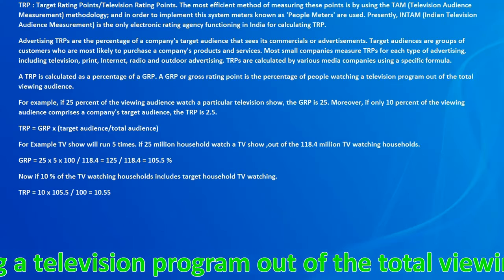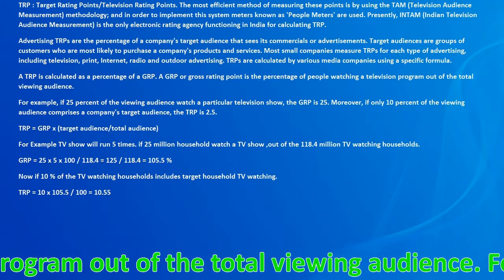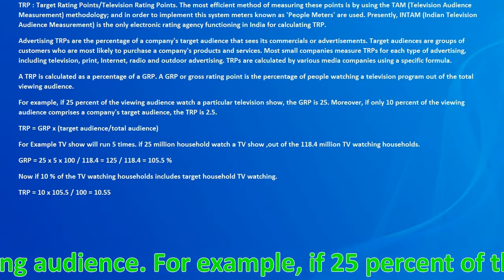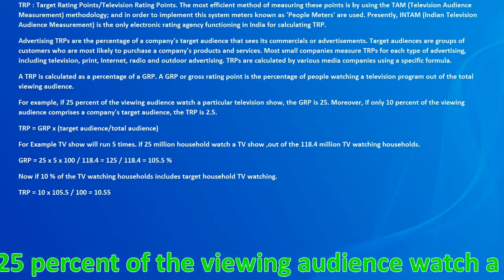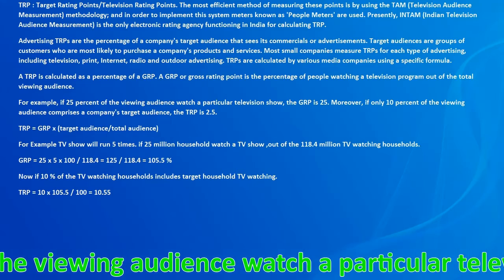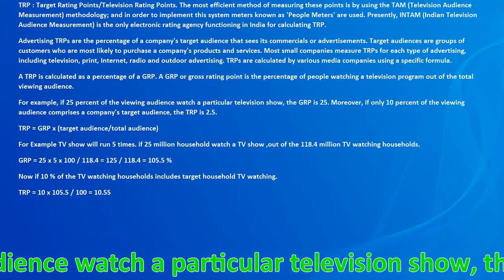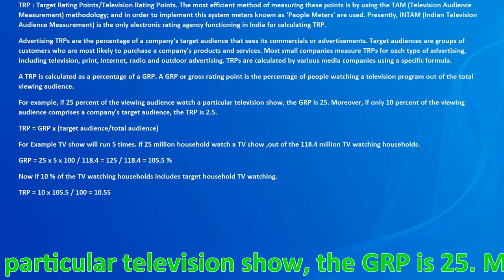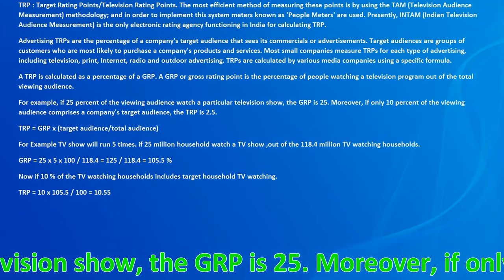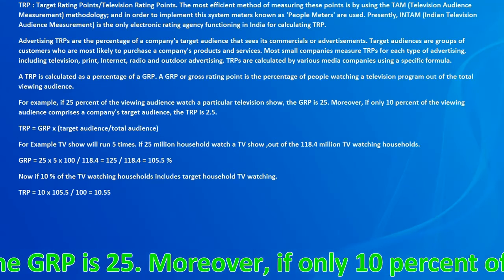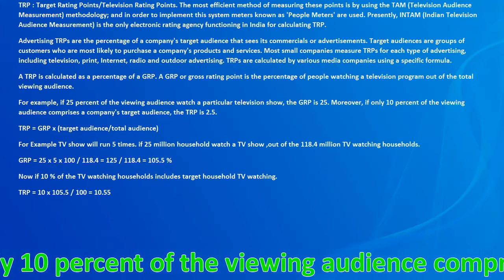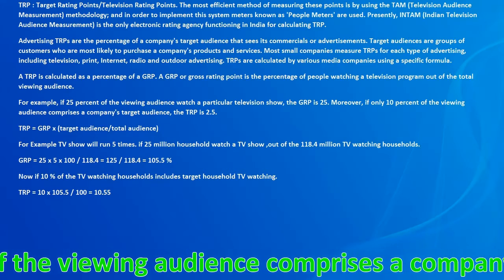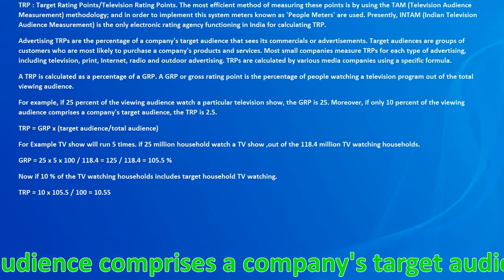Moreover, if only 10% of the viewing audience comprises a company's target audience, then the TRP is 2.5. The formula is: TRP equals GRP multiplied by target audience divided by total audience.